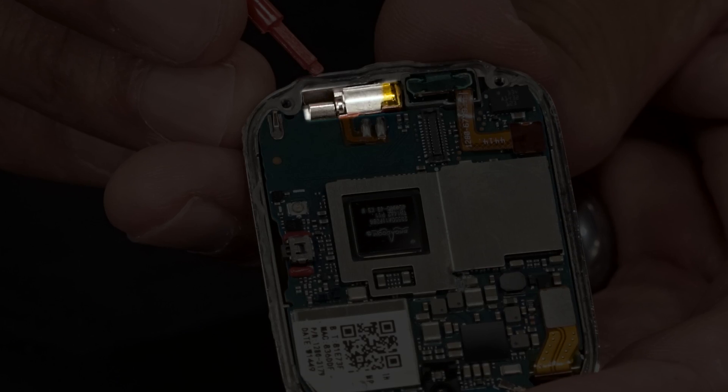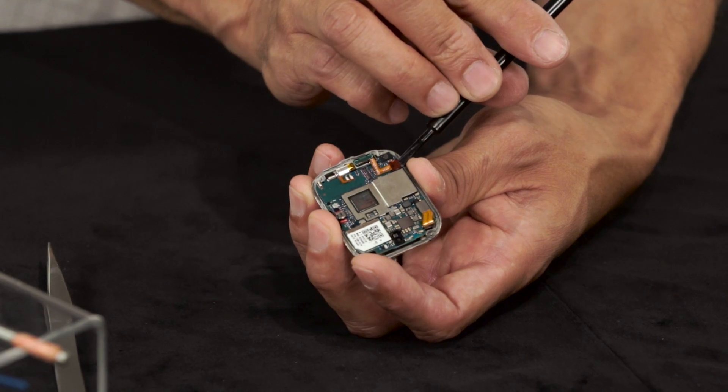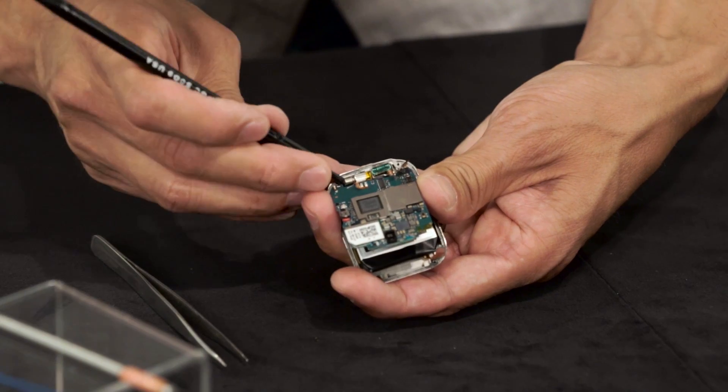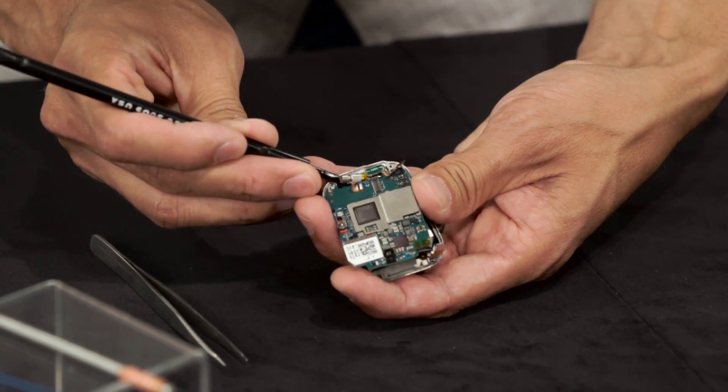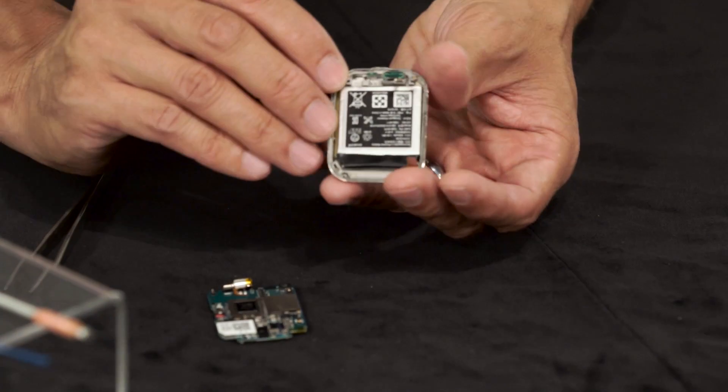This here is the actuator that causes the vibration when you get incoming text messages or phone calls. Now we'll remove the circuit board by disconnecting the USB and its cables. We also remove the vibrator motor, which is held by a press-fit cable. Underneath the circuit board is the battery, which covers the whole inside of the metal board.